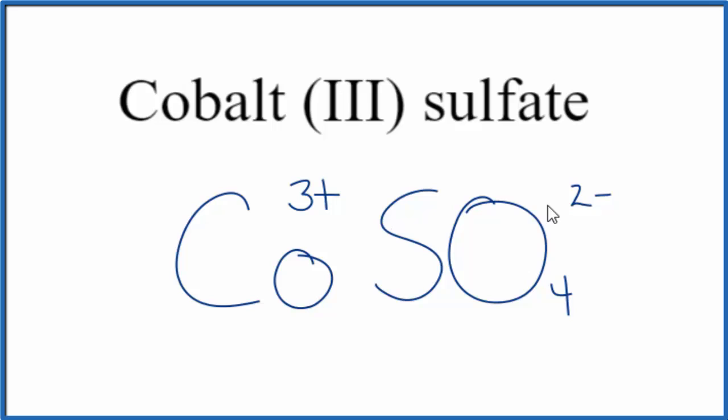Right now we have 3+ and 2-, so it's a little bit challenging. What we can do is use the crisscross method to figure it out. We can move the 2 down here, put the 3 out here, get rid of these symbols.